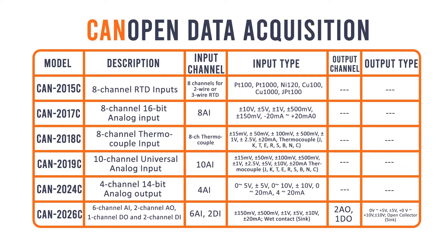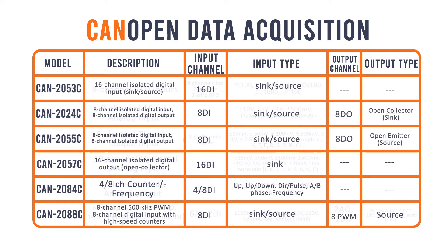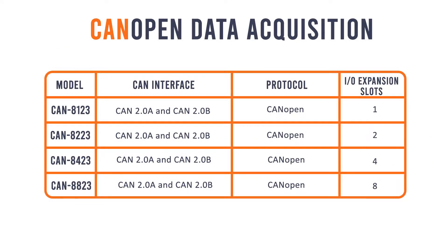CANOpen is a CAN-based application layer protocol. It was developed as a standardized embedded network with highly flexible configuration capabilities, designed for motion-oriented machine control networks such as handling systems. By now, it is used in many various fields, such as medical equipment, off-road vehicles, maritime electronics, public transportation, and building automation.